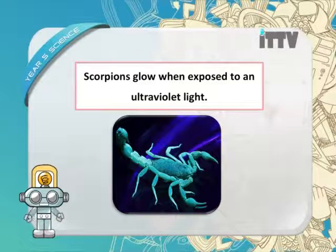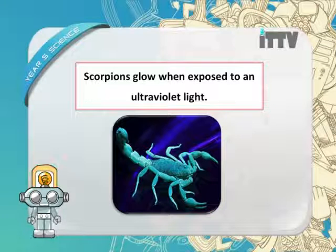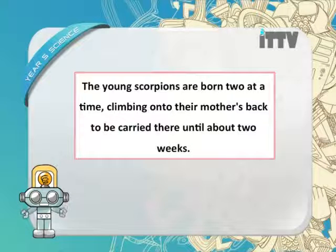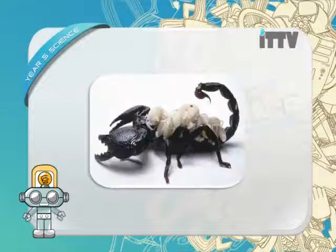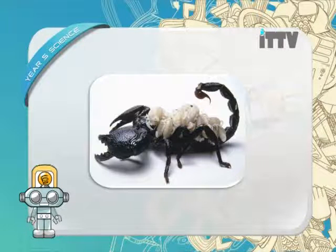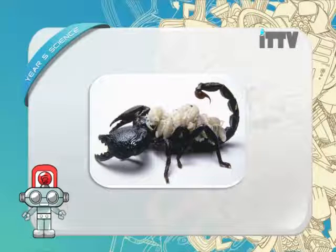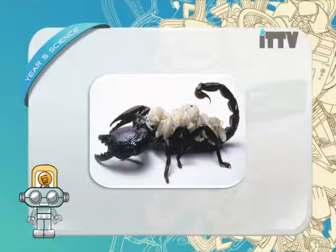Scorpions glow when exposed to ultraviolet light — they have a chemical substance on their body covering that allows them to glow in the dark. Young scorpions are born and climb onto their mother's back to be carried there for about two weeks. After those two weeks, the scorpions mature and can survive by themselves.